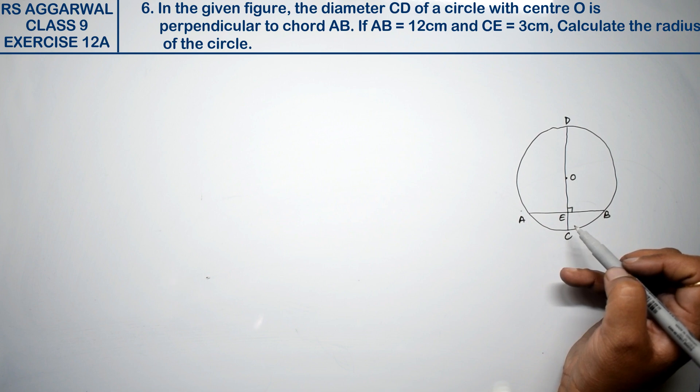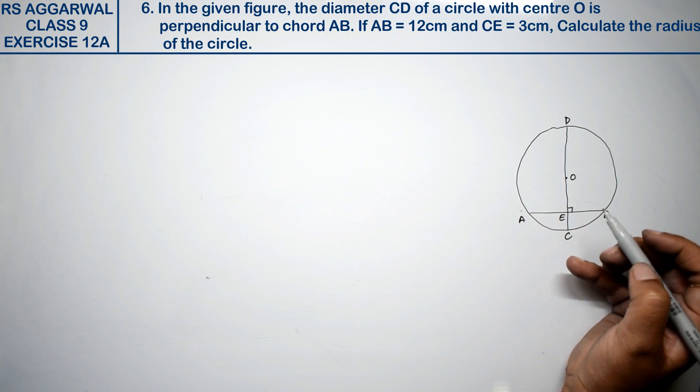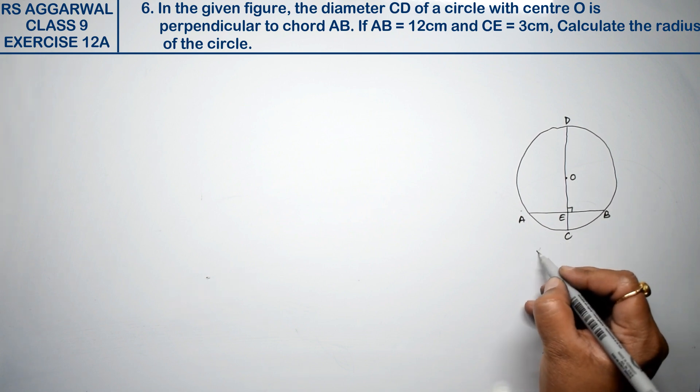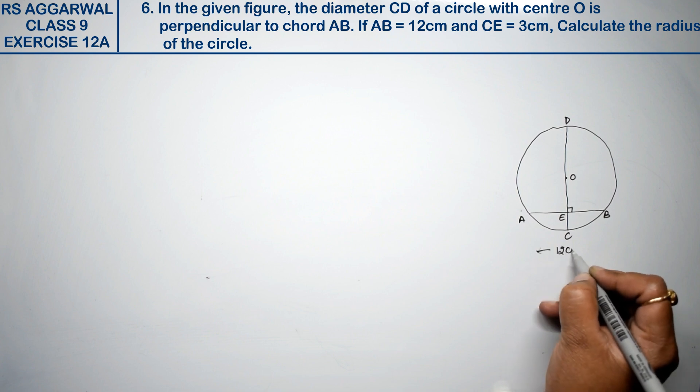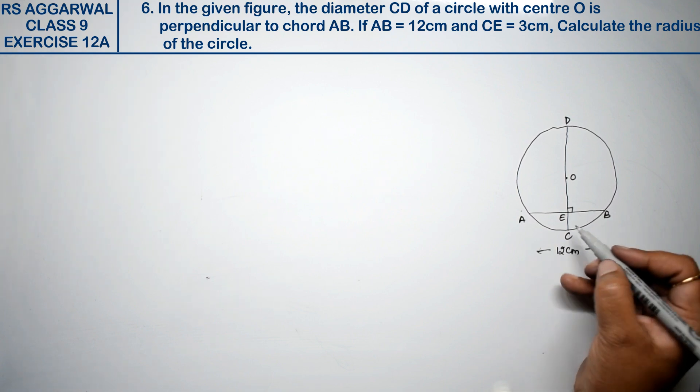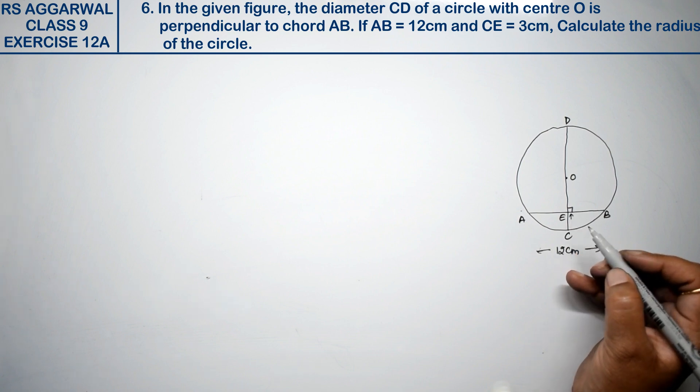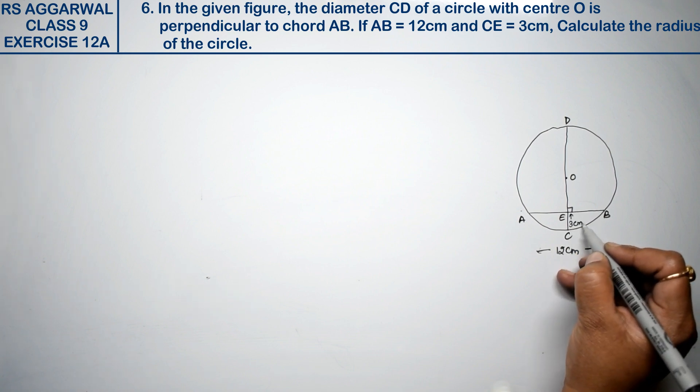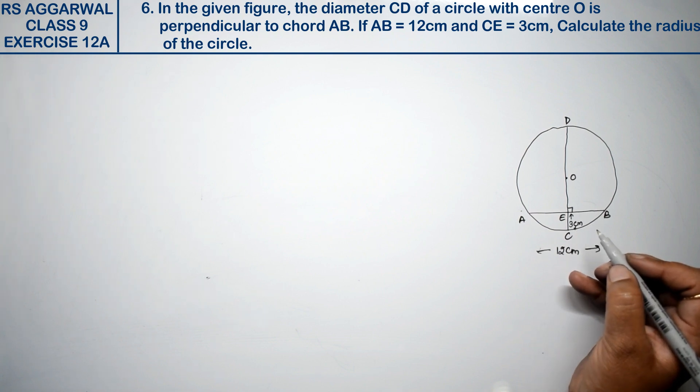This is perpendicular to the chord. If AB is 12 cm, AB is 12 cm, right? And CE is 3 cm. Friends, what will we do? We need to find the radius of the circle.